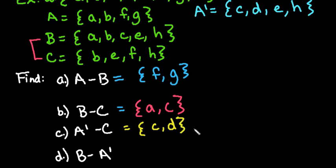So C and D are the two letters that are left in A naught that are not also in C. It's kind of hard to read when you have the negations in there.